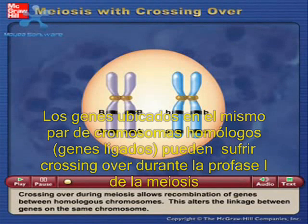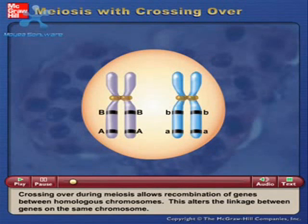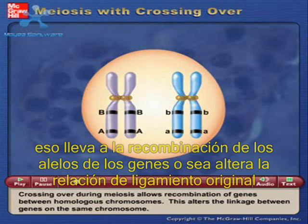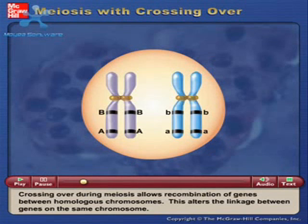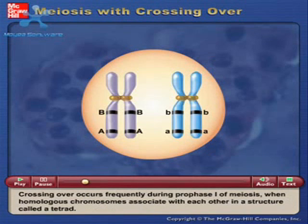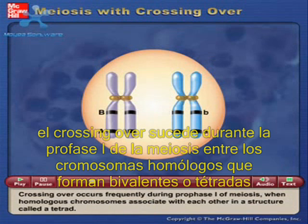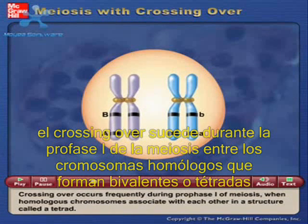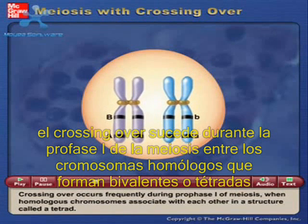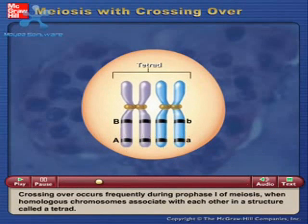Crossing over during meiosis allows recombination of genes between homologous chromosomes. This alters the linkage between genes on the same chromosome. Crossing over occurs frequently during prophase I of meiosis when homologous chromosomes associate with each other in a structure called a tetrad.